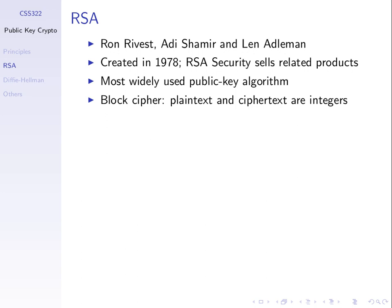RSA was developed by Rivest, Shamir, and Adleman in 1978, and they set up a company — RSA Security — which is quite large in terms of cryptography and sells products using RSA and other algorithms. It is the most widely used public key algorithm.